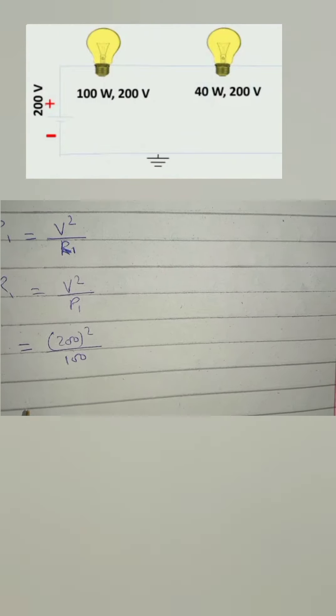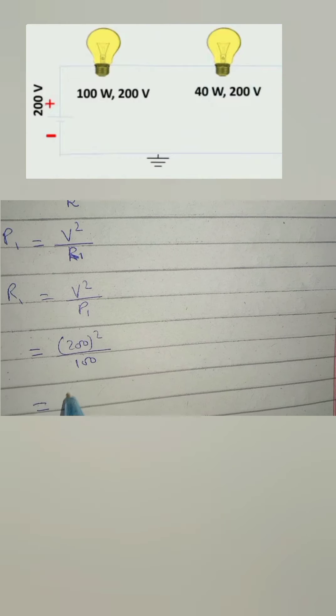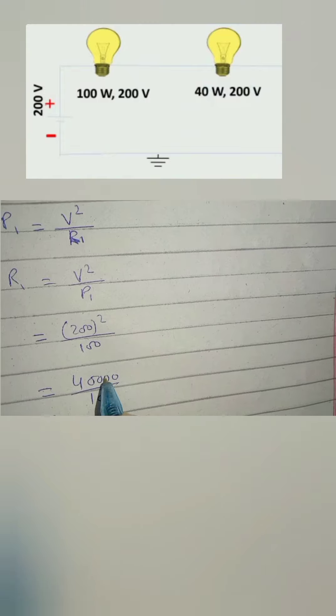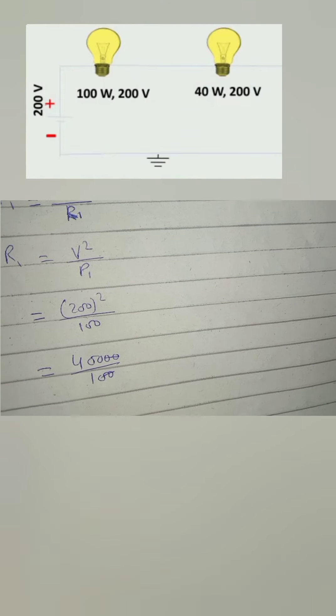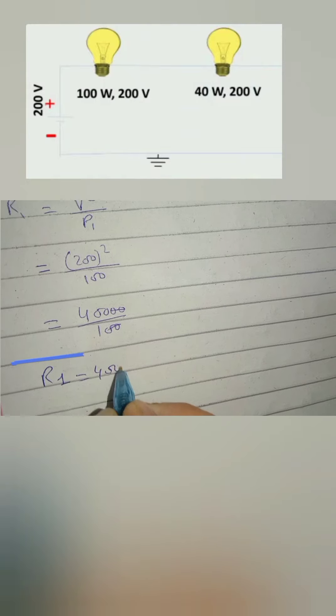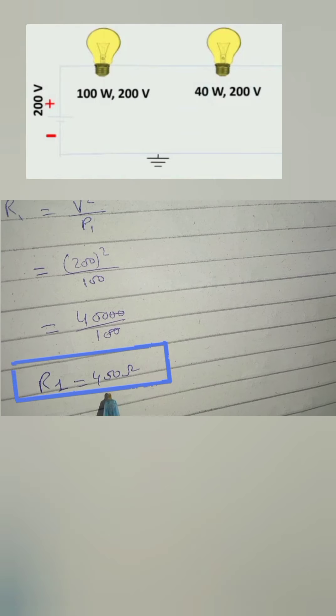200 square divided by 100 will give us 400 ohms. So this is the resistance of first bulb.